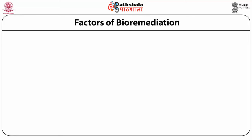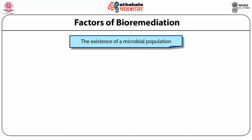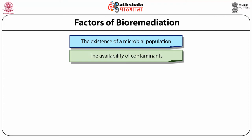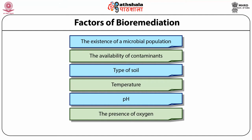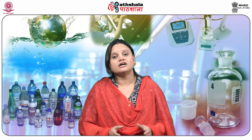Now let's discuss the factors of bioremediation. The control and optimization of bioremediation processes is a complex system of many factors. These factors include the existence of a microbial population capable of degrading the pollutants, the availability of contaminants to the microbial population, and environmental factors like types of soil, temperature, pH, the presence of oxygen or other electron acceptors and nutrients.